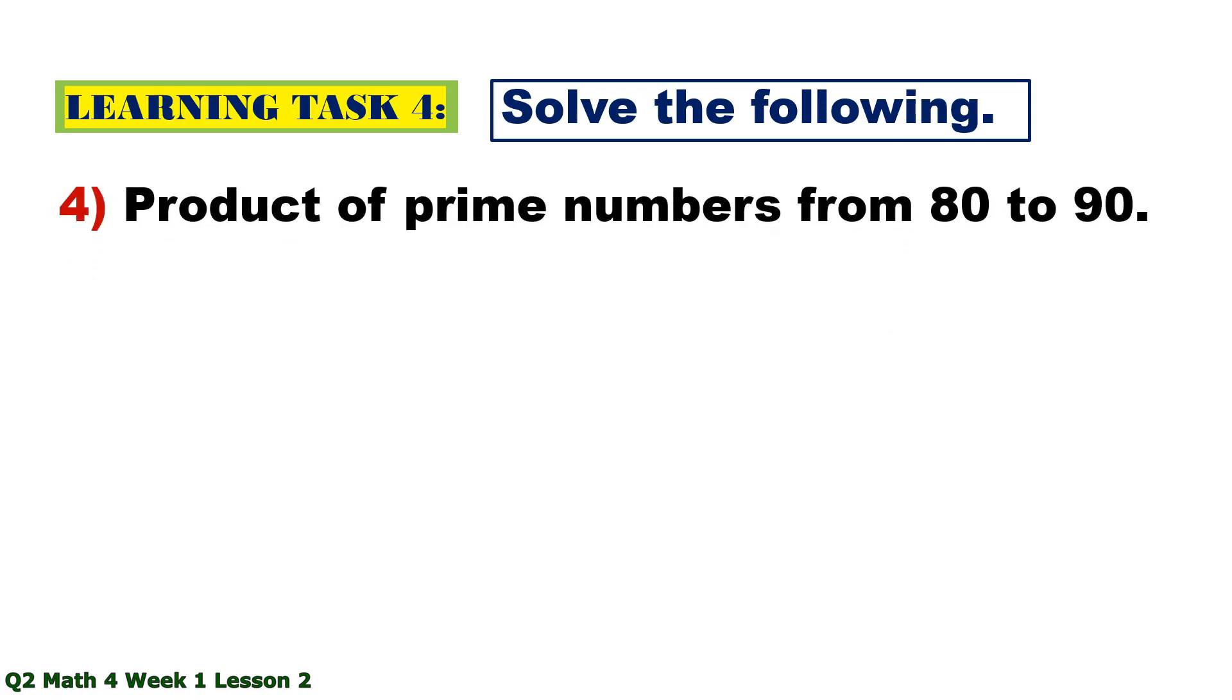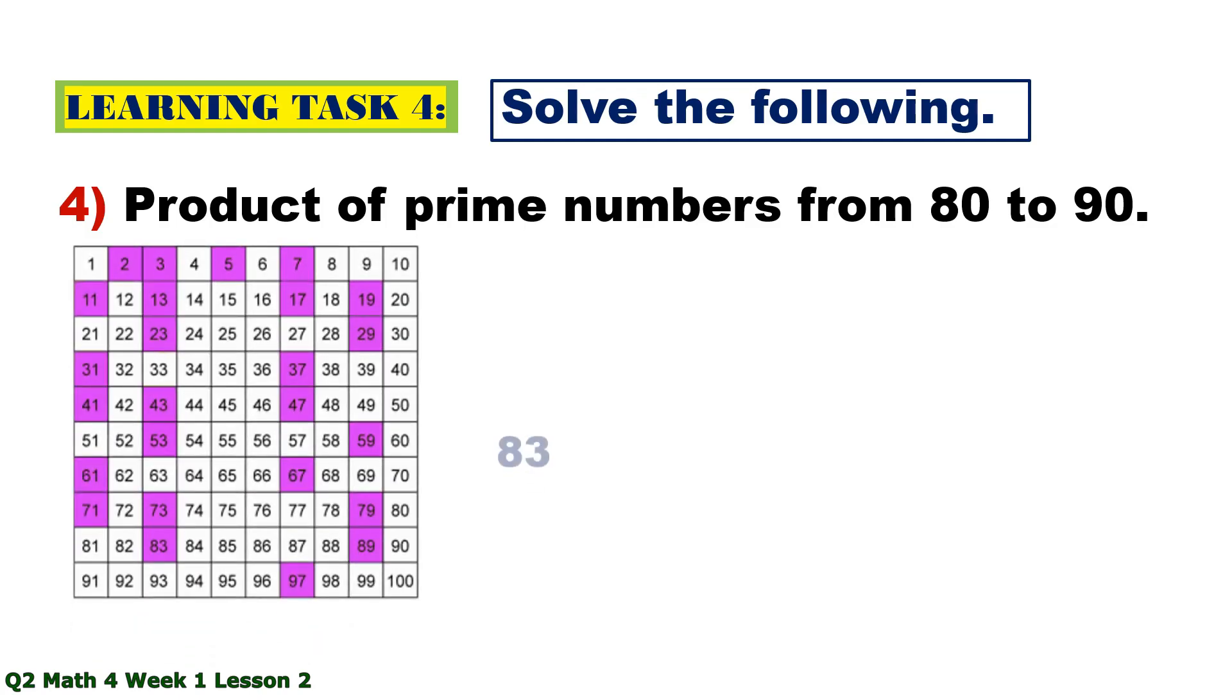Number 4. Product of prime numbers from 80 to 90. So 83 times 89. And the product is 7,387.